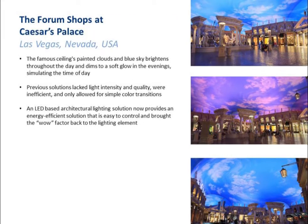The Forum Shops at Caesars Palace in Nevada has a beautifully trompe l'oeil painted ceiling that looks like a Venetian skyline with painted clouds and sky. They're able to wash that ceiling with color-changing luminaires, allowing them to change what the environment feels like. While the painting remains the same, changing the colors and direction of those wash lights really makes that environment seem alive.